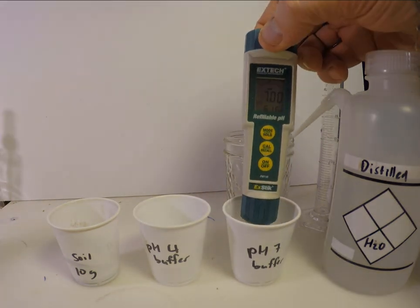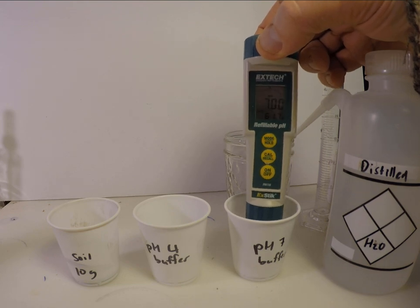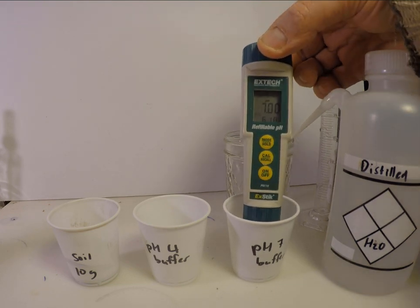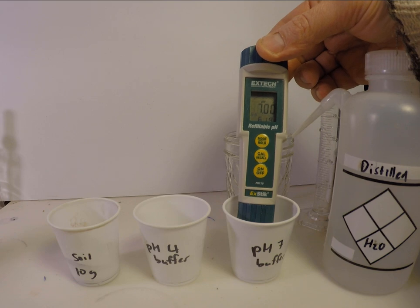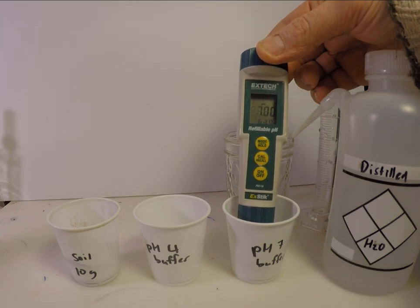Then the pH meter is immersed in the first buffer. For many pH meters, this is the pH7 or neutral buffer. When the reading stabilizes, it indicates this, here with the word end.